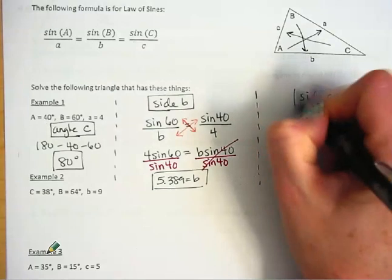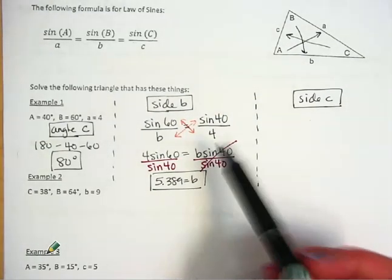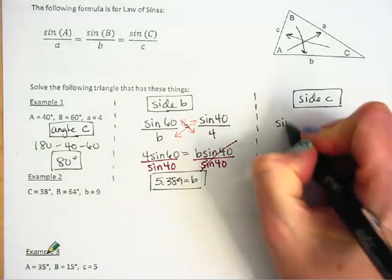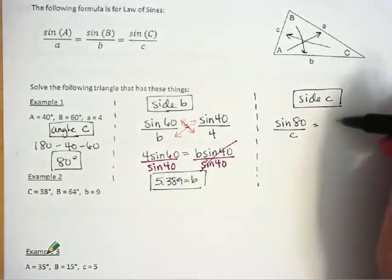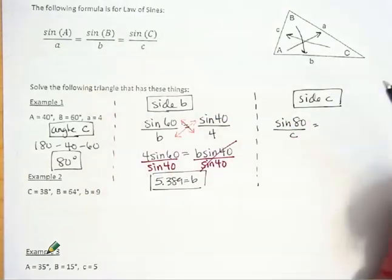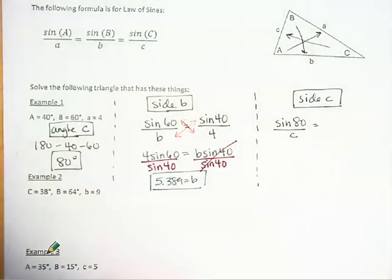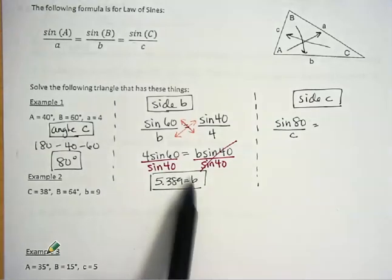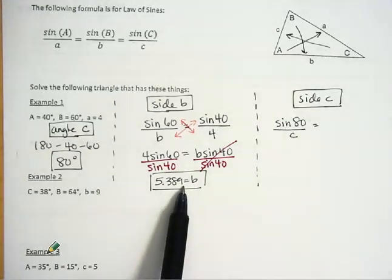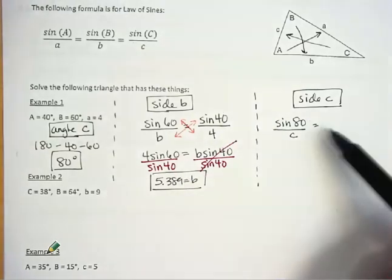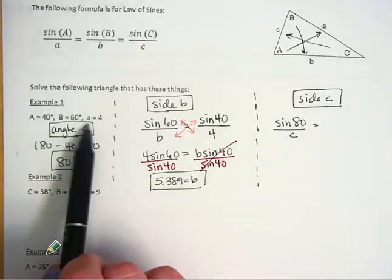Now I'm going to find side c. I'll set up the ratio the same way: sine of angle C over variable c. We found that angle C is 80 degrees, so that's sine of 80 over c. For the other ratio, I could use either the B or A information, since I now have both parts of B. However, best practice is to use the A information because it was given to you and you know it's correct. If you got the B value wrong, using it here would carry that error forward.